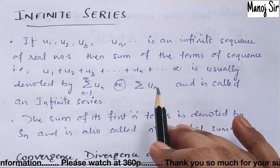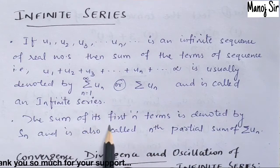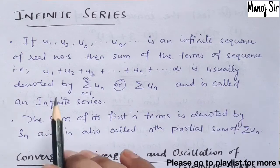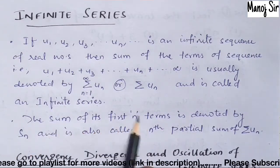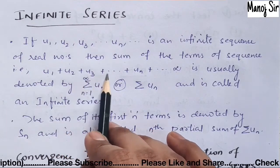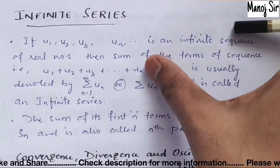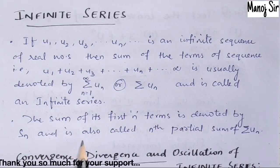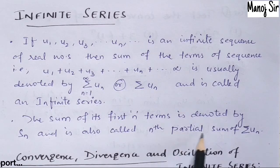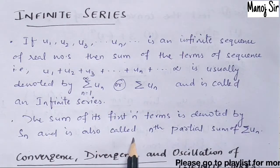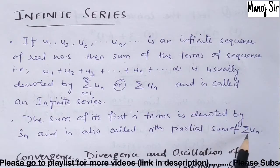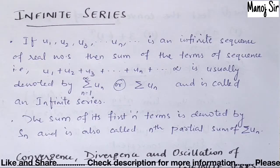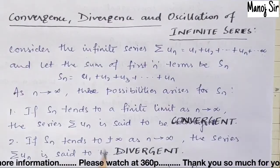An important point: the sum of the first n terms is denoted by Sₙ, where Sₙ = u₁ + u₂ + u₃ + ... + uₙ. This is also called the nth partial sum of Σuₙ.